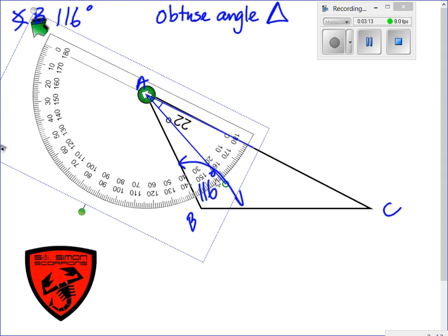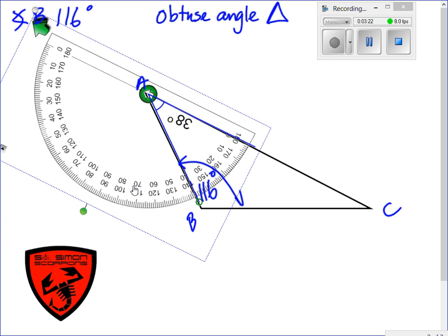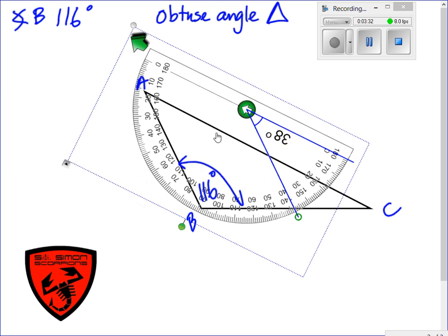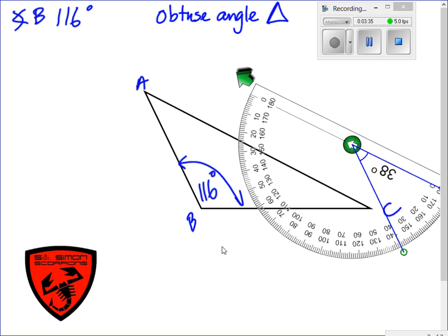Okay, so angle A looks to be about 38 degrees, approximately. Let's see. 38. Yep, that's about right for angle A. So let's move this out of the way. We're going to jot down that angle A is 38 degrees.